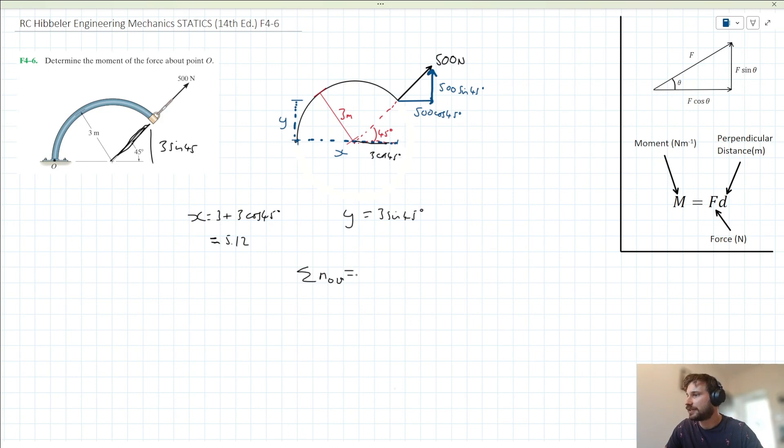Is equal to, let's consider the anticlockwise moment first which is our 500 sin 45 here. We can say that the anticlockwise moment here is 5.12 times 500 sin 45, and that our clockwise moment here is going to be this 500 cos 45 moment. So we've got a distance of y away from point O, so we can say minus 3 sin 45 times 500 cos 45.